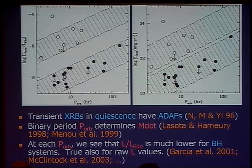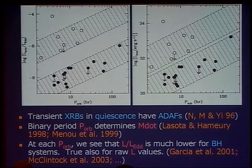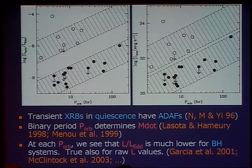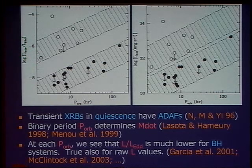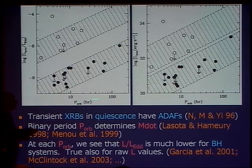Let's look at this plot. This shows the quiescence of a whole lot of X-ray binaries. For all of them, you look at their luminosity — this was the fourth panel in the 2007 paper. The quiescent luminosity in Eddington units is plotted here against the orbital period of the binary.